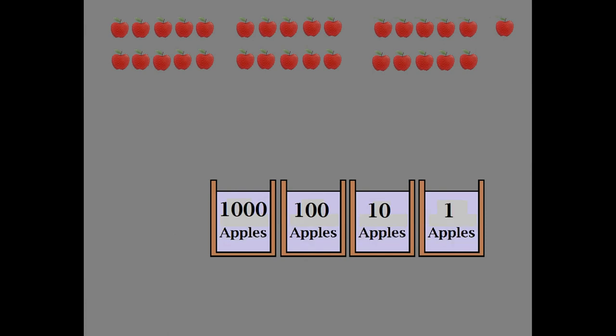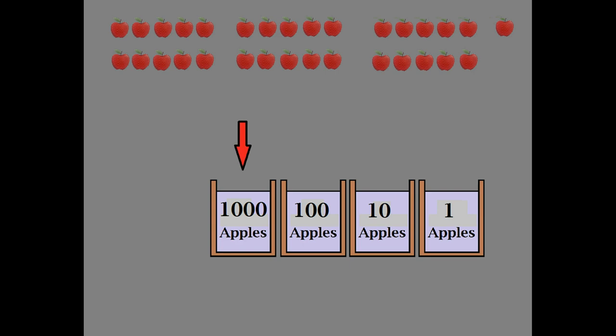We've got a bunch of buckets, and we're going to fill these buckets up with the apples. The trick is how you fill the buckets. The bucket on the right-hand side, you can put one apple at a time into it. But if you're going to put any apples in this bucket, you have to put ten at a time into it. This bucket requires groups of 100 apples, and this one requires groups of 1,000.